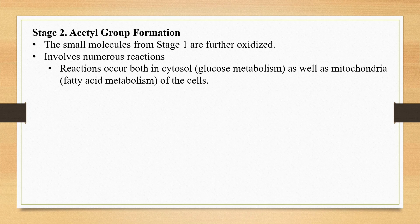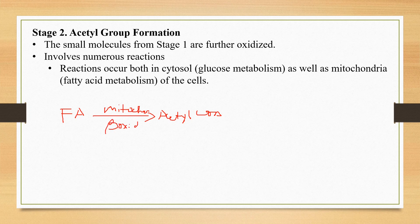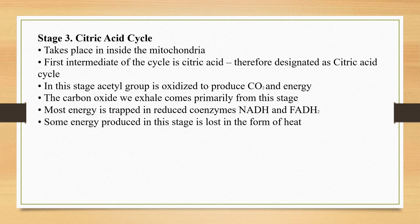The fatty acids produced from the digestion of oils and fats are also converted into acetyl-CoA. This conversion of fatty acids to acetyl-CoA takes place in the mitochondria. The process by which fatty acids are converted into acetyl-CoA is called beta-oxidation. The acetyl-CoA produced in stage two will then be oxidized in a process called the citric acid cycle.